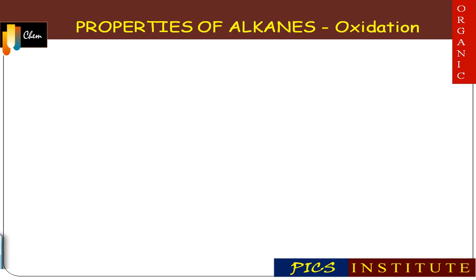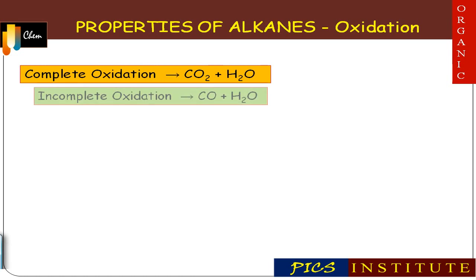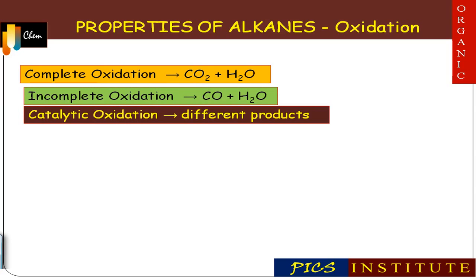Properties of alkane: first, oxidation or combustion. Alkanes undergo oxidation by three methods. Number one: complete oxidation, which converts alkane into carbon dioxide and water. Number two: incomplete oxidation, which converts alkane into carbon monoxide and water.